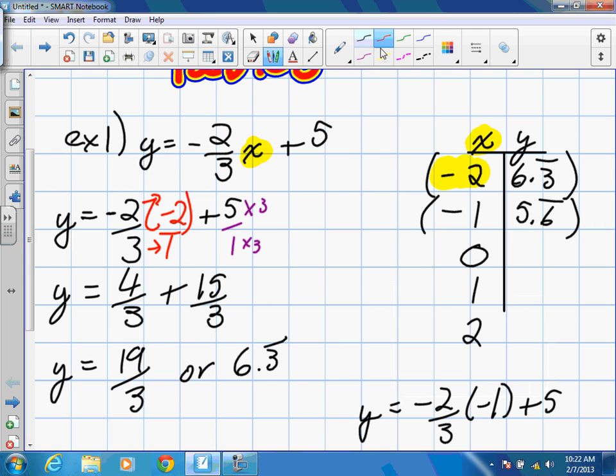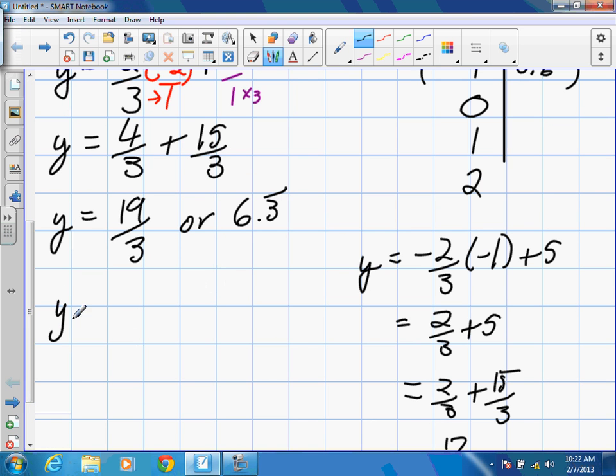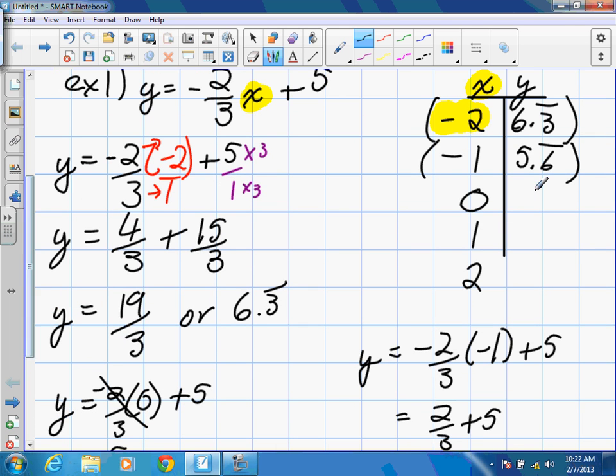The next one is 0. So, y is equal to negative 2 over 3 times 0 plus 5. 0 times anything will be 0. So this cancels out and really we just get y equals 5. So that's very simple. The next coordinate is 0 and 5.